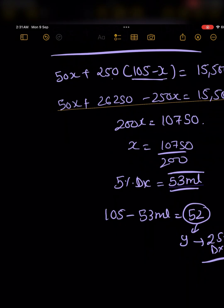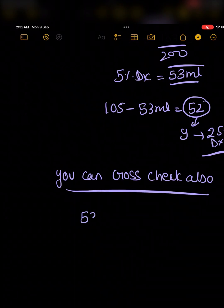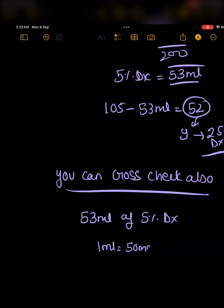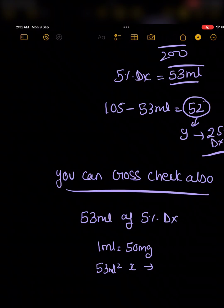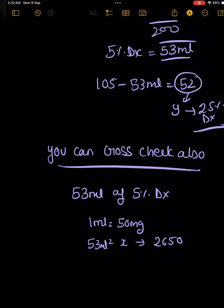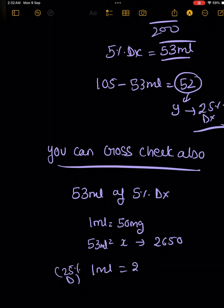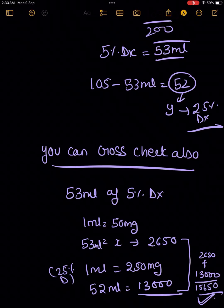You can also cross-check the answer. We have 53 ml of 5% dextrose. Since 1 ml contains 50 mg, 53 ml contains 2,650 mg. We have 52 ml of 25% dextrose; since 1 ml contains 250 mg, 52 ml contains 13,000 mg. The total of the two comes out to 15,650 mg, which closely matches our calculated total daily sugar of 15,500 mg.